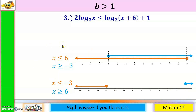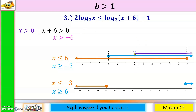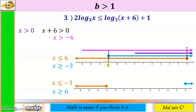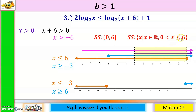Recalling our first two conditions from ensuring logarithms are defined — x > 0 and x > −6 — we now determine the intersection of all four graphs. The solution set is from 0 to 6, with 6 included. So the solution set is (0, 6]. In set-builder notation: x is less than or equal to 6 but greater than 0.